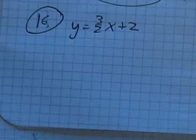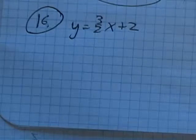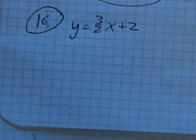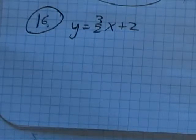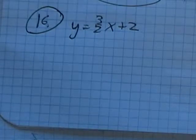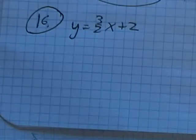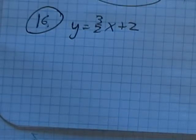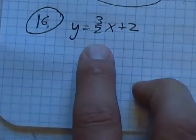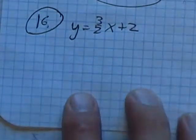This is Math 98 practice final, problem number 16. We're supposed to graph it and identify the important points: the x-intercept, y-intercept, and the vertex, if it exists. This doesn't have a vertex — it's a line.